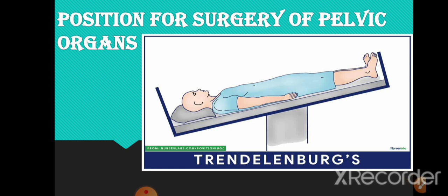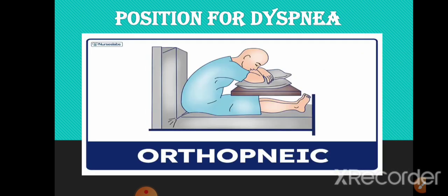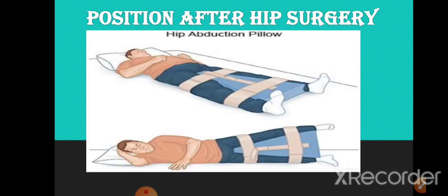The next one is position for surgery of pelvic organs — the answer is Trendelenburg position. The next one is position for dyspnea, or difficulty in breathing — we can give orthopneic position to the patient. If orthopneic position option is not given, then we will choose Fowler's position.